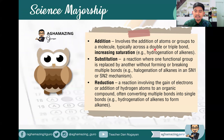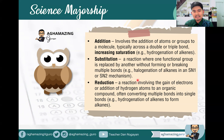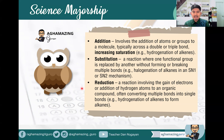Addition involves the addition of atoms or groups to a molecule, typically across a double or triple bond, increasing saturation — like the hydrogenation of alkenes. Substitution is a reaction where one functional group is replaced by another without forming or breaking multiple bonds — for example, halogenation of alkanes in an SN1 or SN2 mechanism. Reduction involves the gain of electrons or addition of hydrogen atoms to an organic compound, often converting multiple bonds into single bonds.